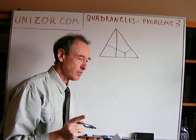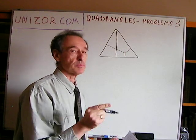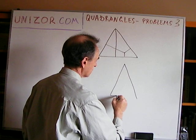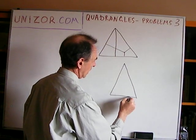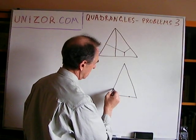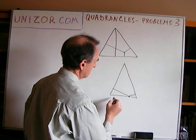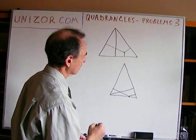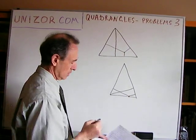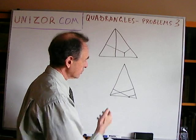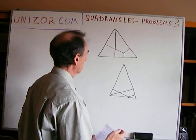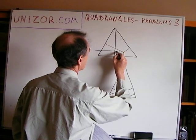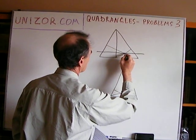In one of the prior lectures, we had a similar problem: in an isosceles triangle, any point on the base gives two distances from two different sides, and we proved that the sum of these is equal to an altitude to a leg. I'll use this result now. We can draw a parallel line through this point.